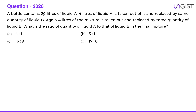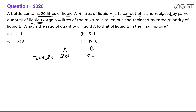The next question: a bottle contains 20 liters of liquid A. Four liters of liquid A is taken out and replaced by the same quantity of liquid B. Initially we have 20 liters of liquid A and 0 liters of liquid B. After the first operation, 4 liters of A is removed, leaving 16 liters of A and 4 liters of B.